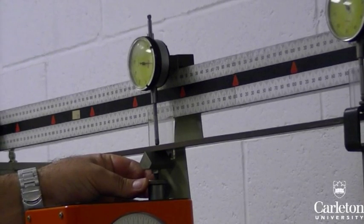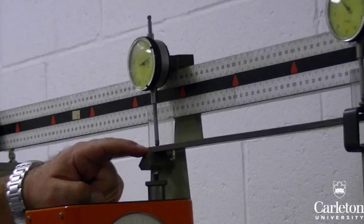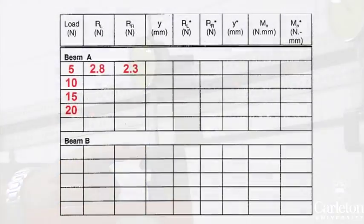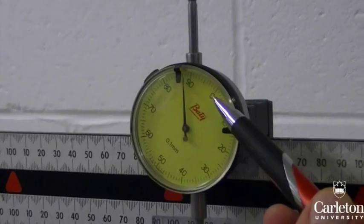Reset the displacement on both gauges by turning this screw on each gauge. Keep turning until the displacement gauge reads zero. Now record the reaction force at both ends as RL and RR, and also record the vertical deflection, or Y, at the hanger.